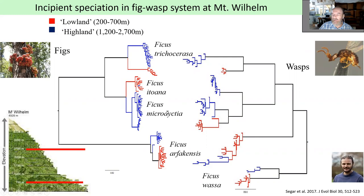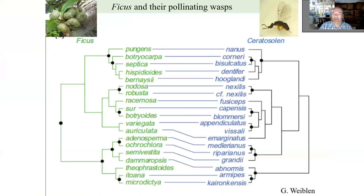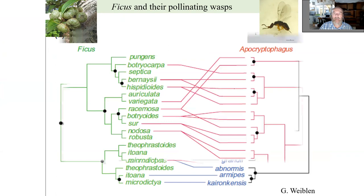They found that figs and their wasps are separated into lowland and highland — one might say subspecies, or genetically distinct populations — which might in the future produce different species. For instance, ficus trichotcerasa really corresponds with its wasps. This is another example of co-speciation from New Guinea: a selection of New Guinea ficus and their fig wasps from our colleague George Feiblen.